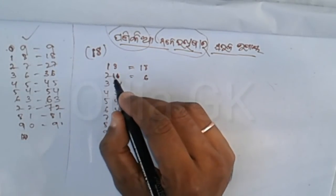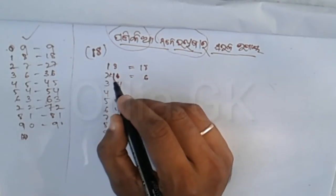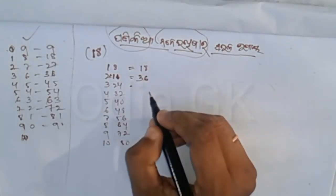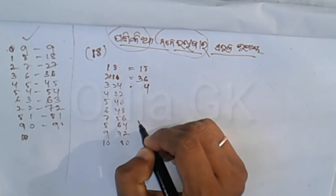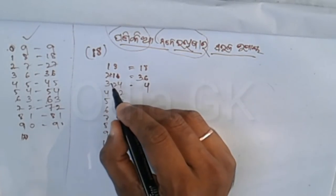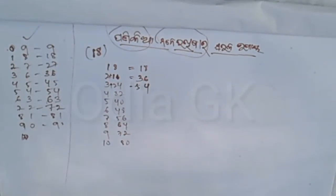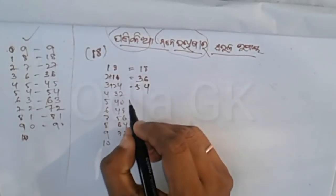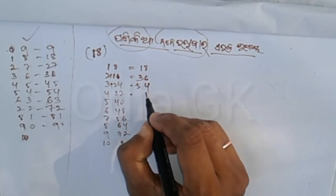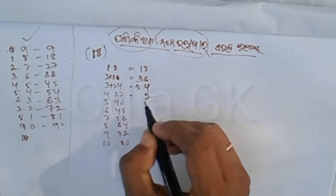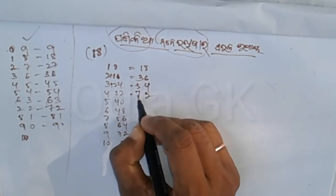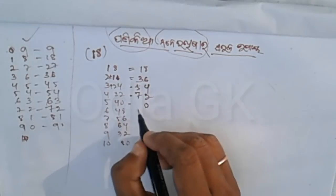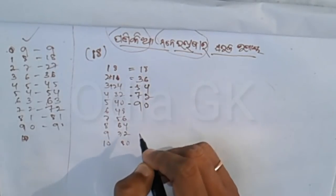So if you find 1,3 and 4,3 and 4,3 and 4,3 and 4,3 and 4,3 and 4,1. So if you find 2,1 and 4,3 and 4,5 and 5,2.